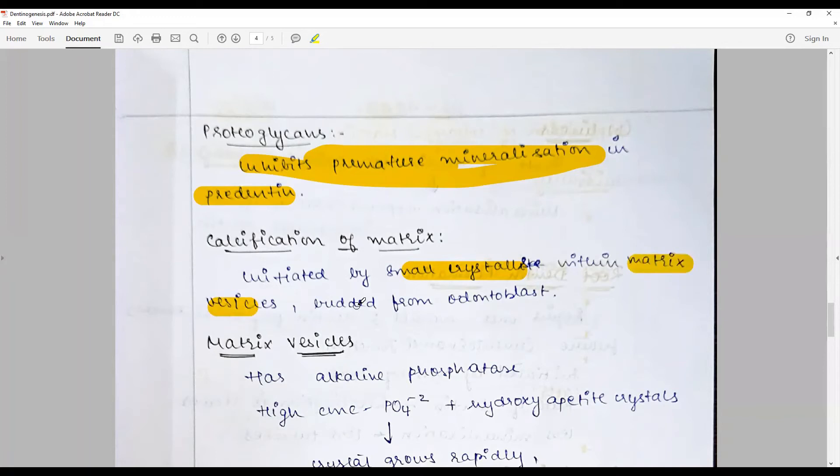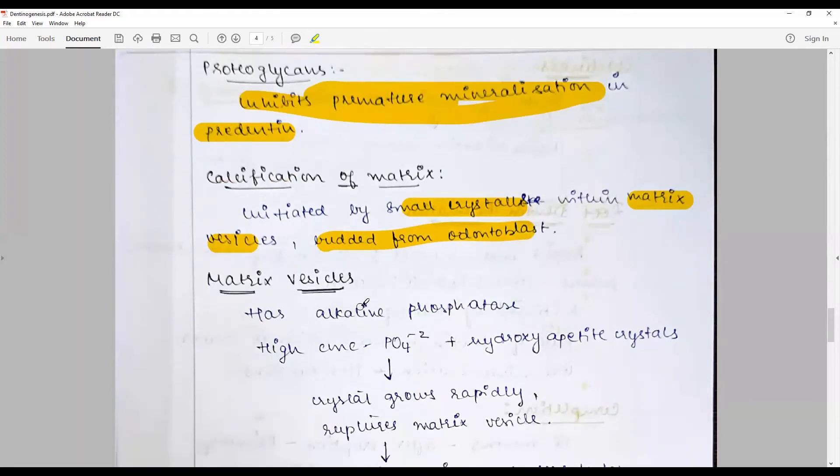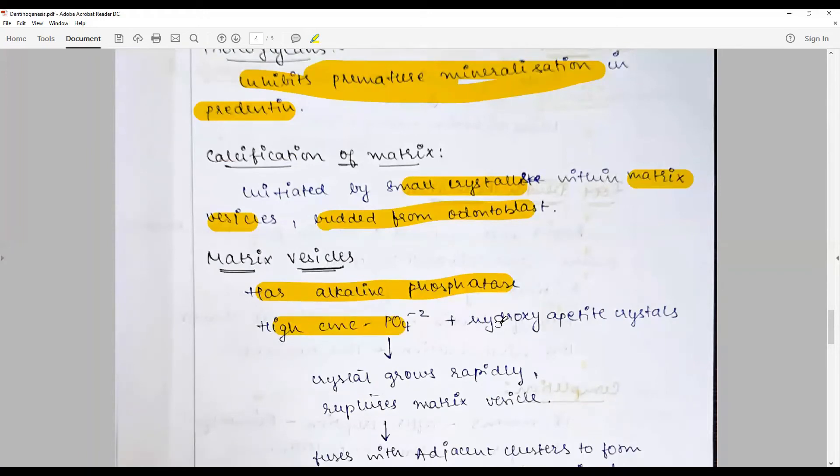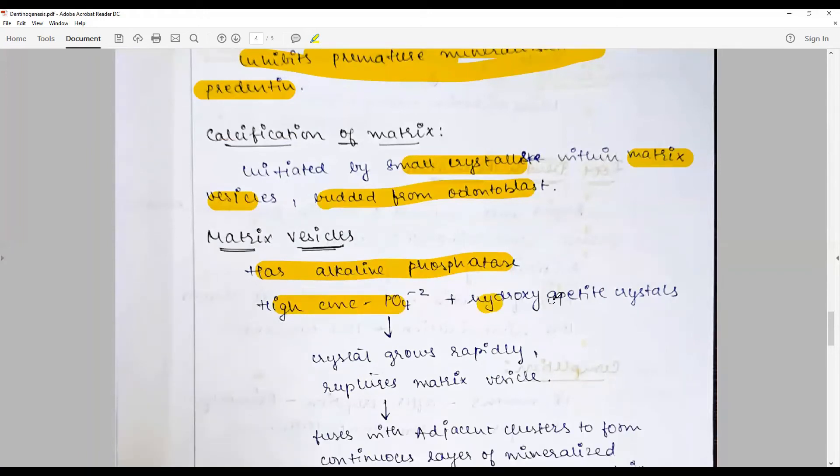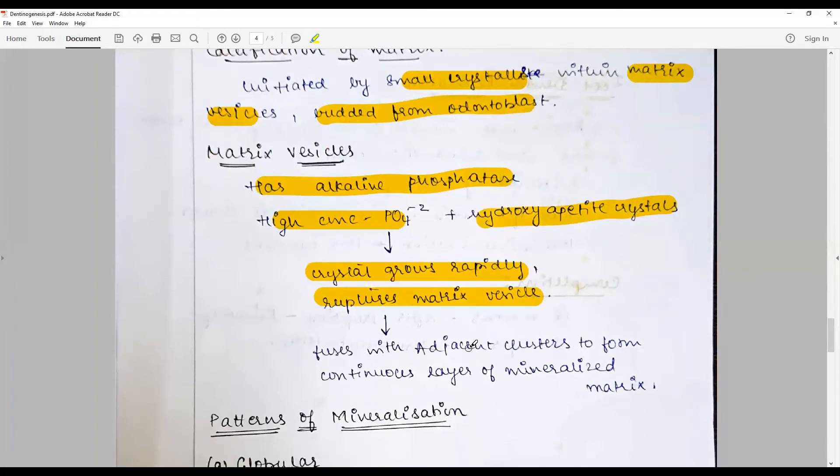Matrix vesicles are small membrane-bound components that have alkaline phosphatase and high phosphate with some tartrate, causing the formation of hydroxyapatite crystals. These crystals grow rapidly, rupture the matrix vesicle, and fuse with adjacent clusters to form a continuous layer of mineralized matrix.